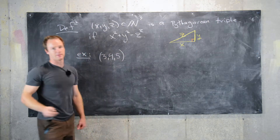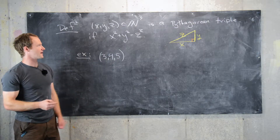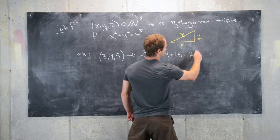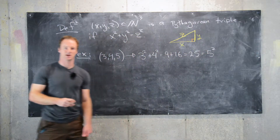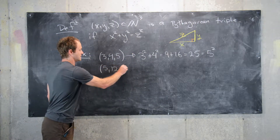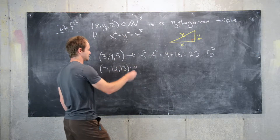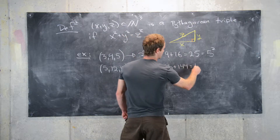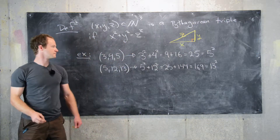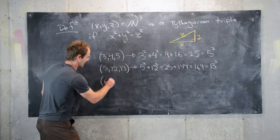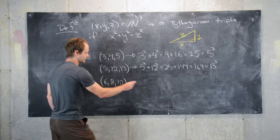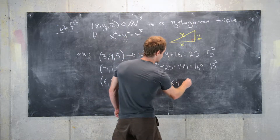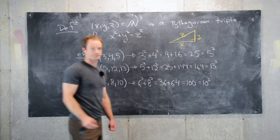The triple (3, 4, 5) is a very common example of a right triangle. It is a Pythagorean triple because 3² + 4² = 9 + 16 = 25 = 5². Another common one is (5, 12, 13): 5² + 12² = 25 + 144 = 169 = 13². One more example is (6, 8, 10): 6² + 8² = 36 + 64 = 100 = 10².